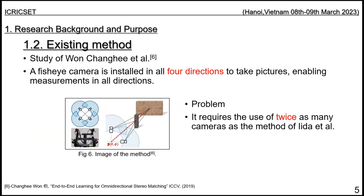In this paper, fisheye cameras are installed in four directions to measure distances, as shown in Figure 6. Although this method enables measurement in all directions, it presents a problem in that it uses twice as many cameras as the prior method.